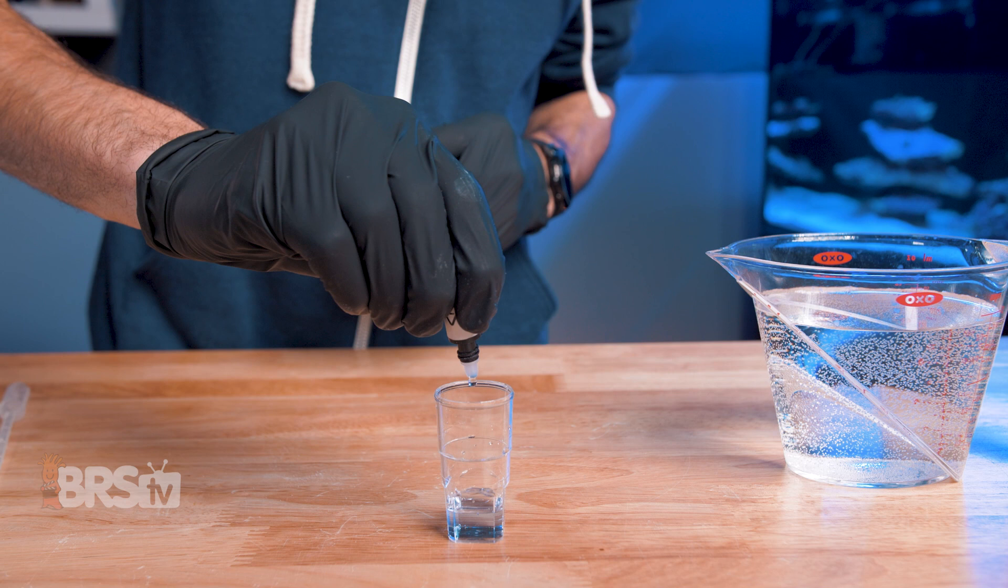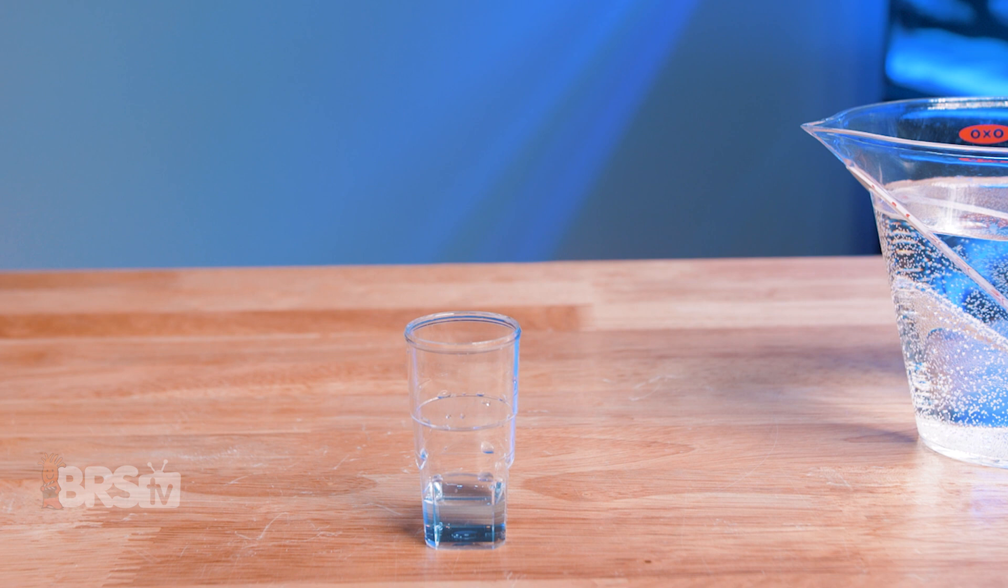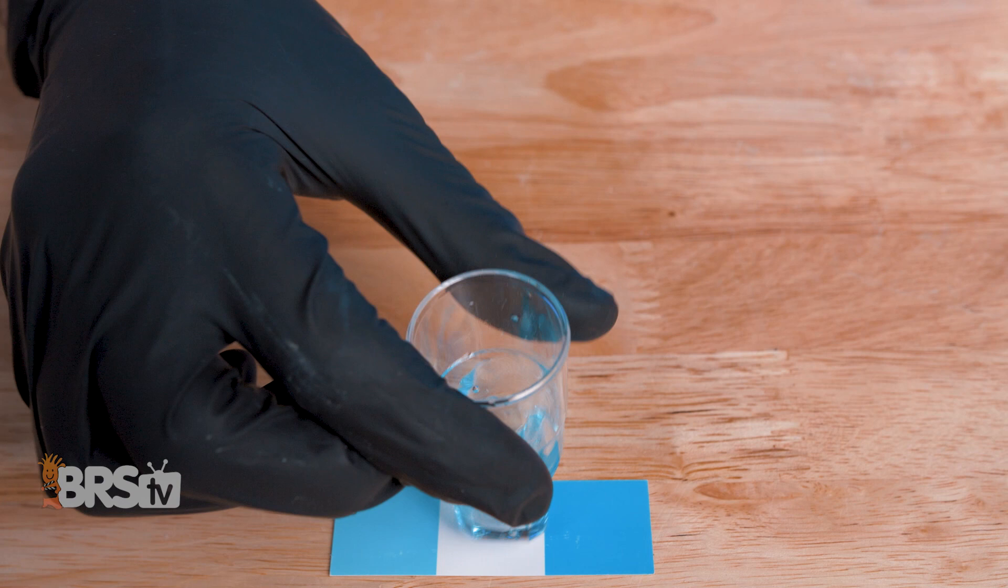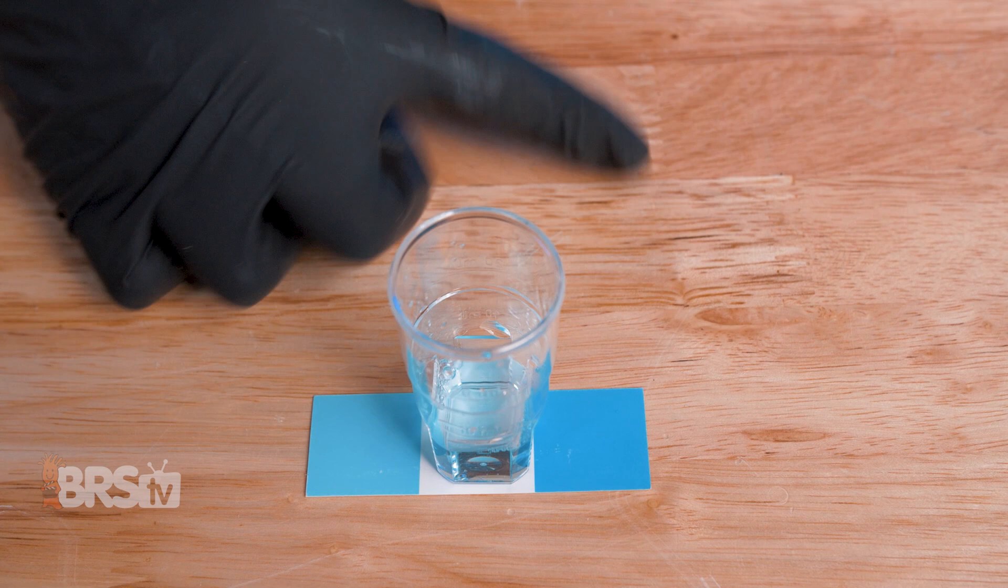Then fill the titration syringe to the one milliliter line with titration solution, place the collection vial onto the color chip, and add one drop at a time, shaking between each drop until the solution changes from light blue to the darker blue on the color chip. Then take note of how much titration solution you've used, compare it to the chart, and you've got your strontium reading.